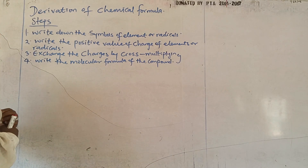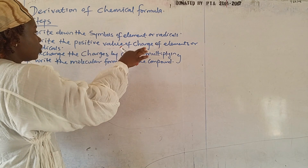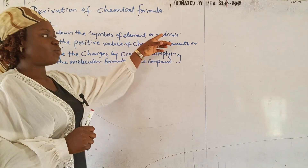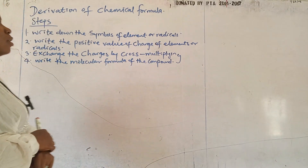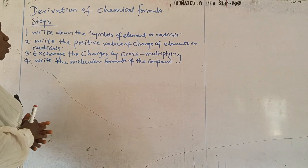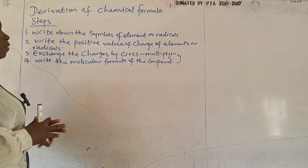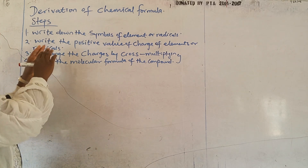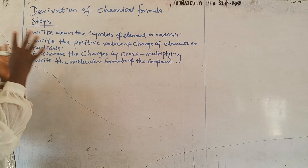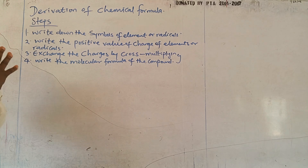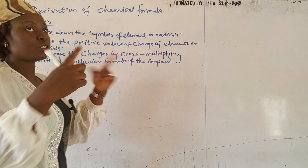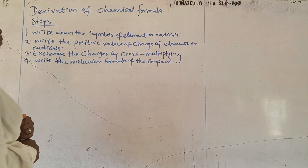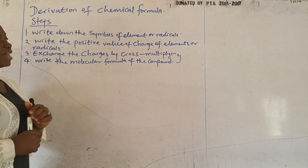Step two: write the positive value of the charge of elements or radicals. Radicals can either have positive or negative charge, and so can elements. For radicals, we just write the positive value of whatever charge is on the radical. Step three: exchange the charges by cross multiplying — it's a kind of cross-breeding. Step four: write the molecular formula.